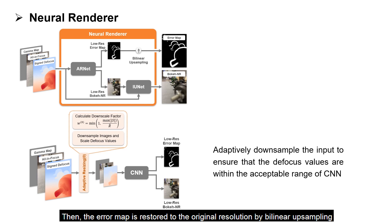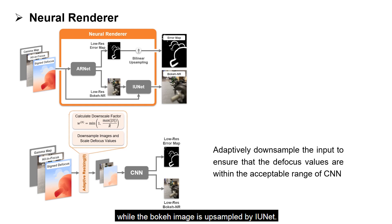Then, the error map is restored to the original resolution by bilinear upsampling, while the bokeh image is upsampled by IUNet.